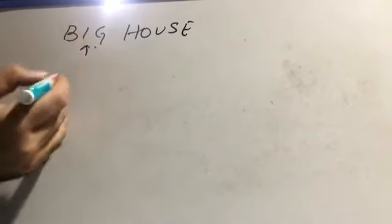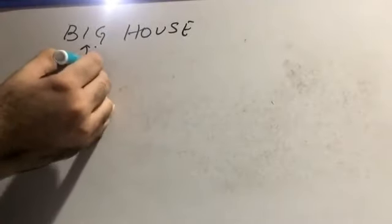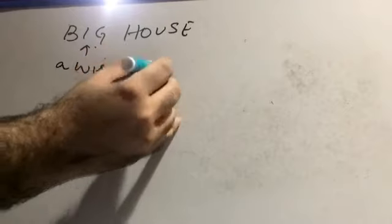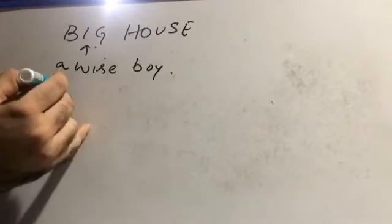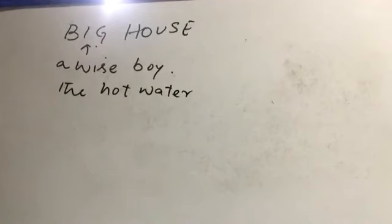Adjectives in Arabic are considered the ism, the nouns. What does an adjective mean? Let's say we have the sentence 'a big house' — 'big' here is an adjective of 'house'; 'house' is the noun. An adjective in English comes before the noun. Like 'a wise boy', 'a big boy', or 'the hot water'. 'Wise' in 'a wise boy' is an adjective, and 'hot' in that construction is also an adjective.